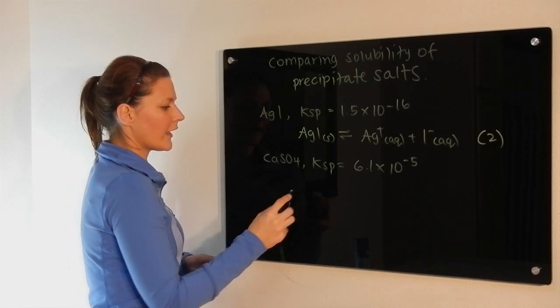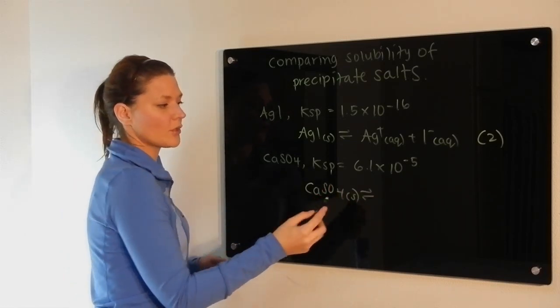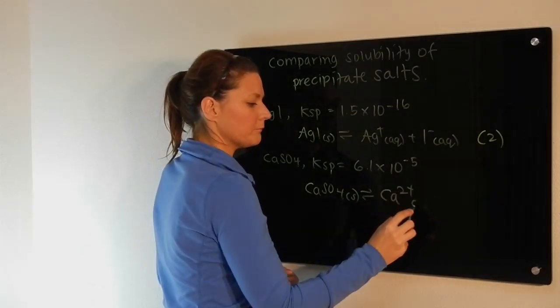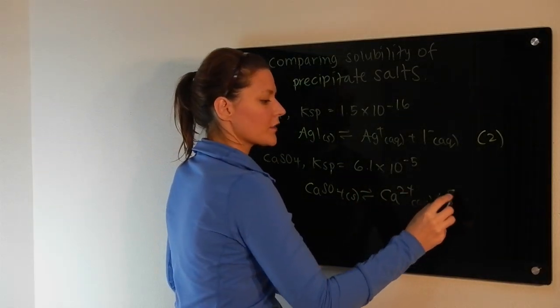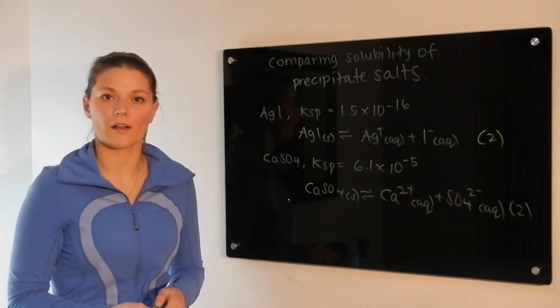If we look now at calcium sulfate, you're going to notice exactly the same thing. It's composed of two different ions, the calcium ion and the sulfate anion. Once again, we're looking at two ions.